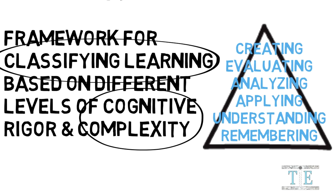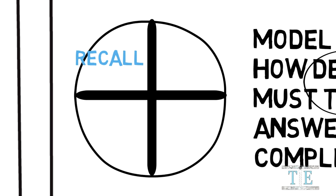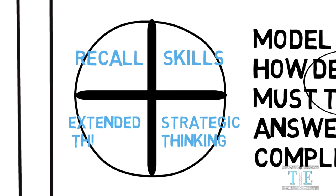Webb's Depth of Knowledge, on the other hand, is presented through a four-level circle. The levels include recall, skills, strategic thinking, and lastly, extended thinking.